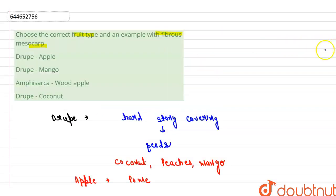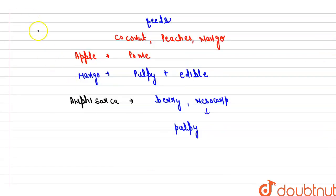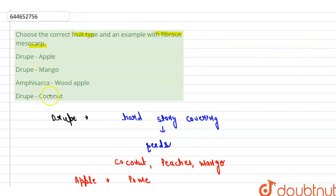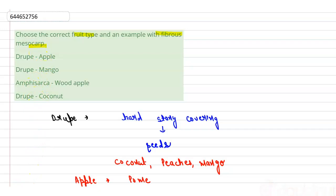In the fourth option we have been given the drupe with the coconut fruit, and this is the correct one. The mesocarp of the coconut is fibrous — the fibrous material in the coconut is coir, and this coir is derived from the mesocarp. So this option is the correct one.